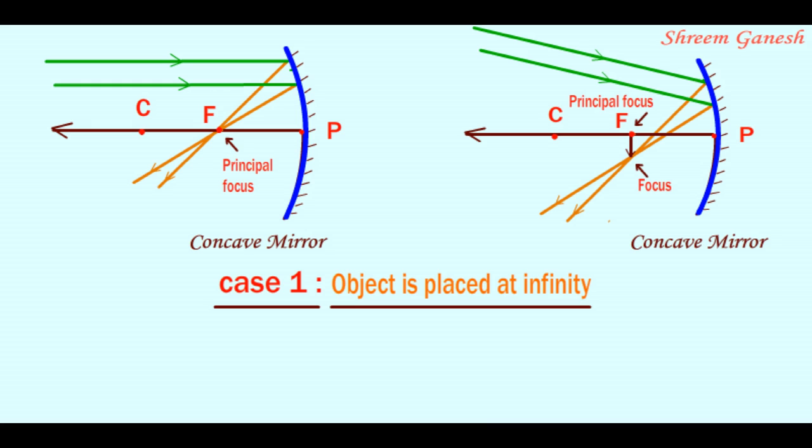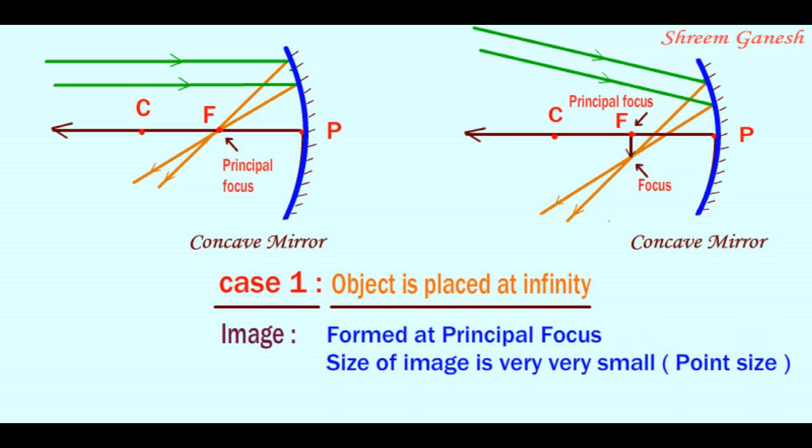In all cases, image is formed at principal focus. The size of the image is very very small or you can say the image is point size. The image is real and inverted.